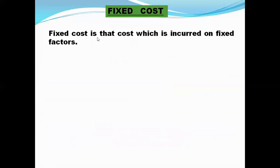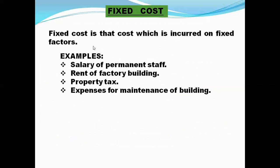Now we come to fixed cost. Fixed cost is that cost which is incurred on fixed factors. For example, permanent staff — even if output is zero, the firm has to give salary to permanent staff. Rent of factory building — even if production has not started, the firm has to pay rent. Also property tax and expenses for maintenance of building. These are examples of fixed cost.